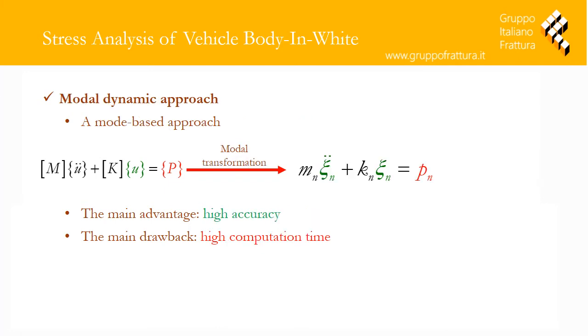The second method is modal dynamic. By using modal transformation, it converts a dynamic finite element problem into a set of uncoupled equations that are easily solved. This method is quite accurate but not computationally economical.